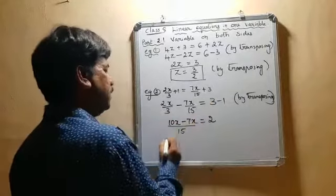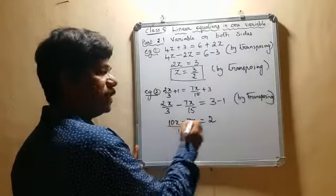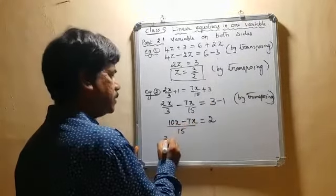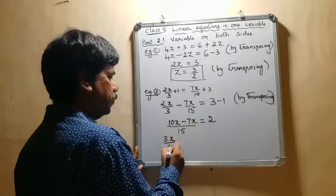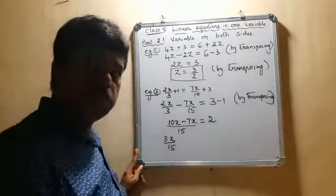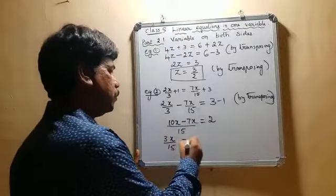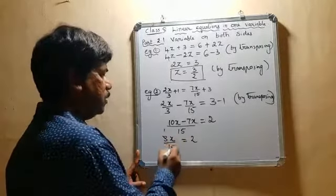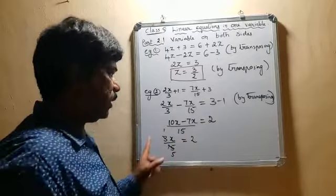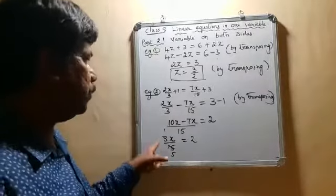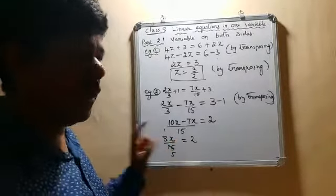Now, simplifying this, it is going to become 10x minus 7x is 3x. 3x by 15. If it is possible, you can cancel it here itself. It equals 2. So 3 and 15, I can cancel it in this way. We are going to get x by 5.